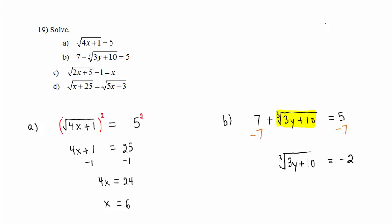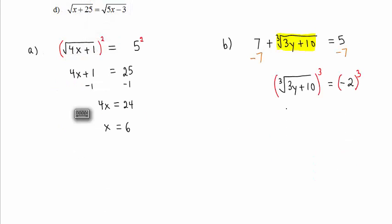On the left-hand side of the equation, the radical is now isolated. Since the radical is a cube root, we will apply the third power to both sides of the equation. Cubing a cube root gives us the radicand,